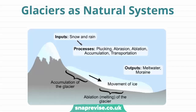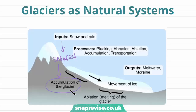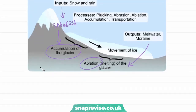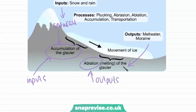Snow and ice are our inputs in our glacial system and these can reach the system through snowfall or avalanches. These inputs can also be known as accumulation. At the other end of our system we have our outputs, shown here as meltwater and moraine, and these can also be named as ablation. So to simplify things, we can think of accumulation as our inputs and ablation as our outputs.